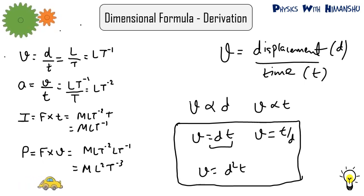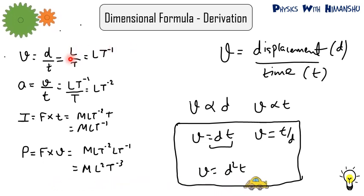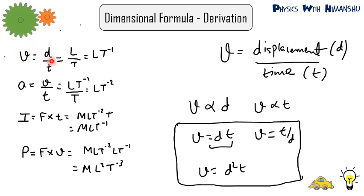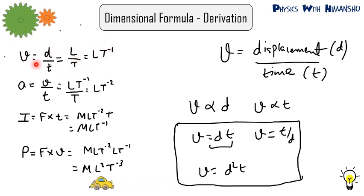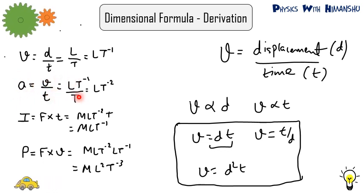Hello everyone. Today we will learn how to derive dimensional formulas, but before that, let us revise how to find dimensions. Velocity is displacement by time, so displacement is length and time is T, making velocity L T minus 1. Similarly, acceleration is velocity divided by time — velocity is L T minus 1 and T is time — so dimension of acceleration is L T minus 2.